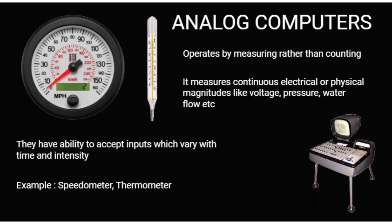We can process or accept data that is continuous in nature. For example, the speedometer which you have in your car, and the thermometer which measures temperature — all these devices fall under the category of analog computers.